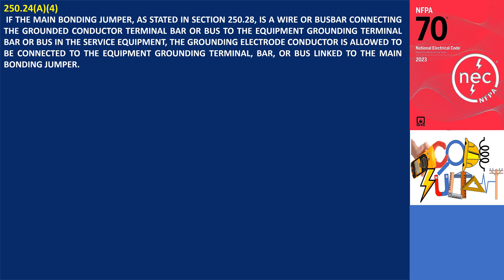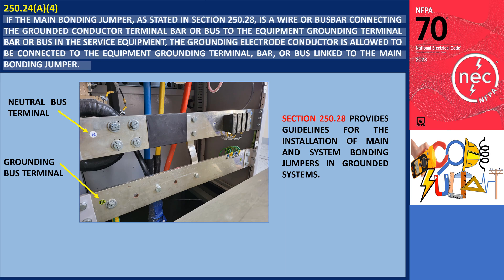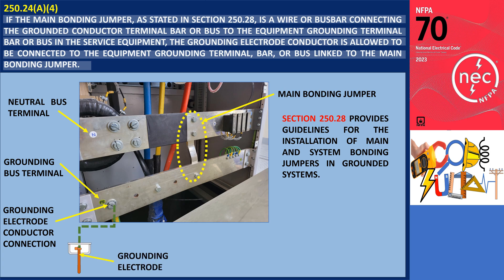Section 250.24(a)(4) specifies that if the main bonding jumper, as stated in Section 250.28, is a wire or bus bar connecting the grounded conductor terminal bar or bus to the equipment grounding terminal bar or bus in the service equipment, the grounding electrode conductor is allowed to be connected to the equipment grounding terminal, bar, or bus linked to the main bonding jumper. The provided image depicts a neutral and grounding bus terminal in a low-voltage switchgear where a bus bar serves as the main bonding jumper, and it is allowable to connect the grounding electrode conductor to the equipment grounding terminal, bar, or bus associated with the main bonding jumper.